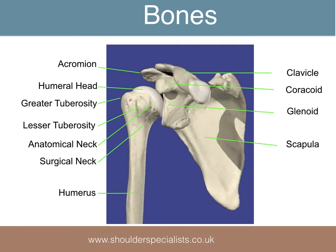The humerus is composed of the head, the greater and lesser tuberosities, and the neck and shaft.